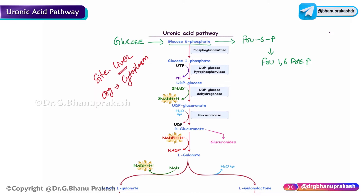The first molecule in the uronic acid pathway is glucose 6-phosphate, a byproduct of glycolysis. In the first step, glucose 6-phosphate gets converted to glucose 1-phosphate — the phosphate shifts its position from the sixth carbon to the first carbon. Wherever you see a phosphate shift between carbons in biochemistry, the enzyme is called a mutase.